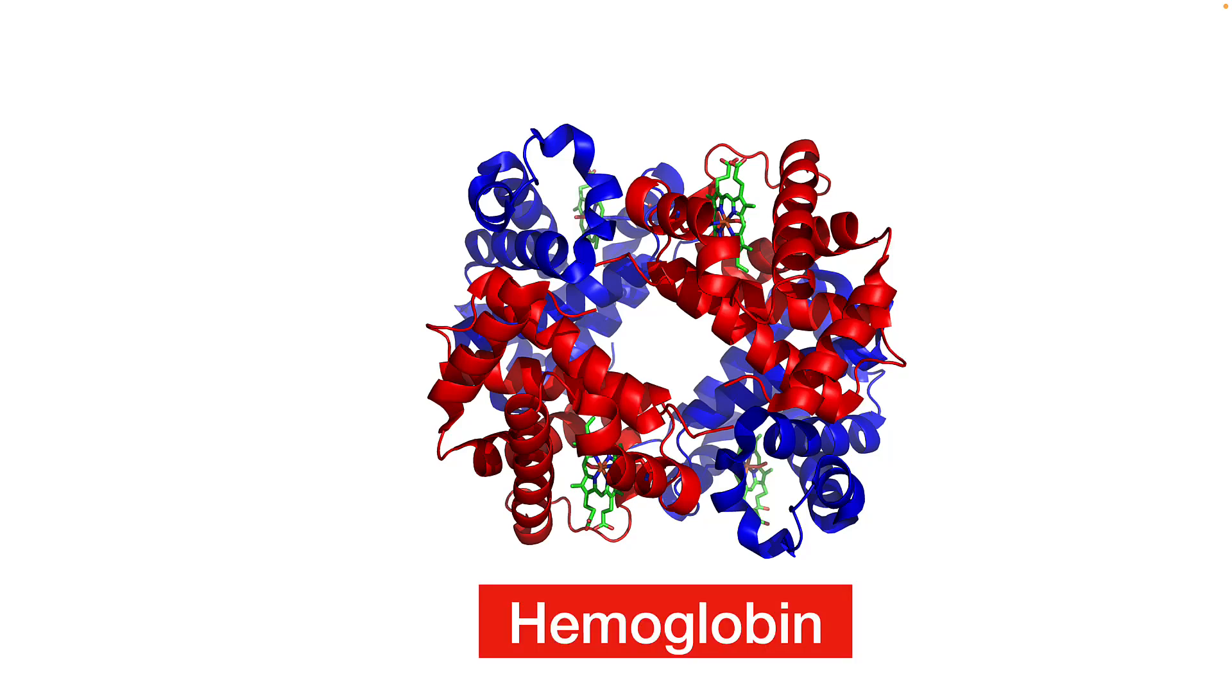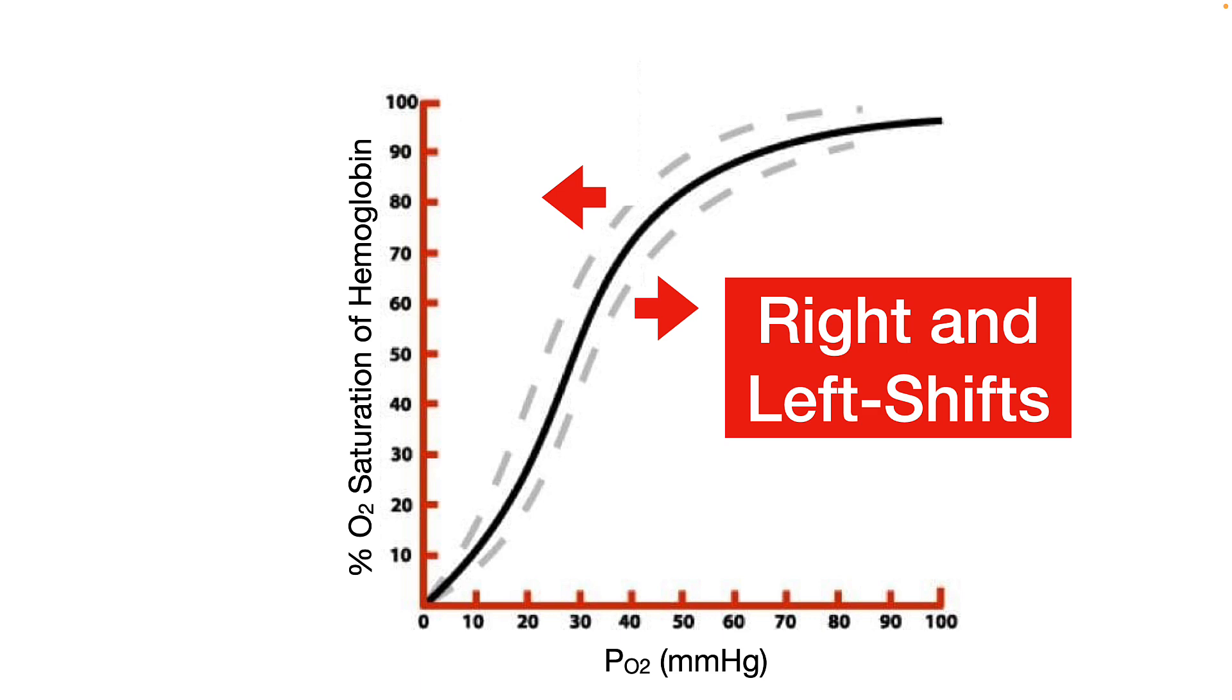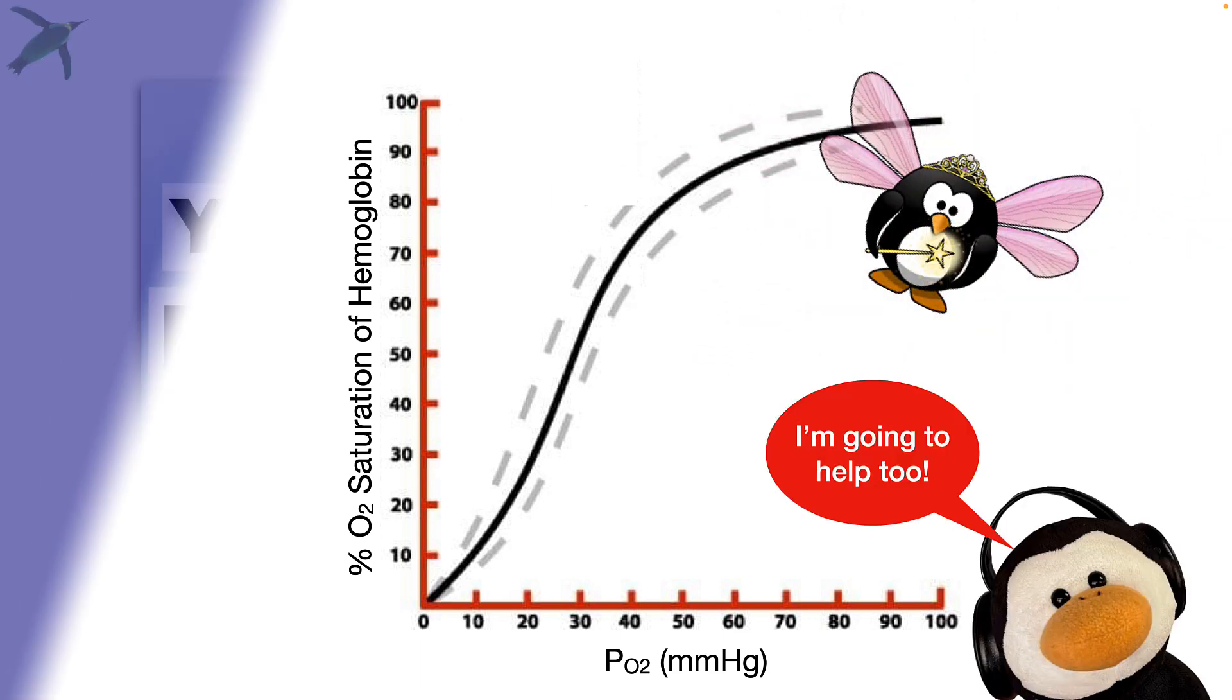We are going to talk about hemoglobin today, specifically this oxyhemoglobin dissociation curve. Why does it shift side to side? Do not be afraid. We're going to penguin prop this thing, and even Flops is here to help.